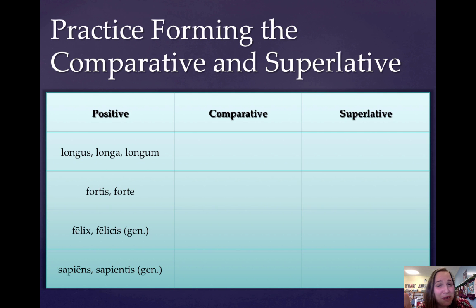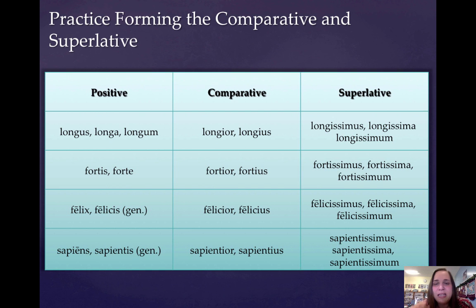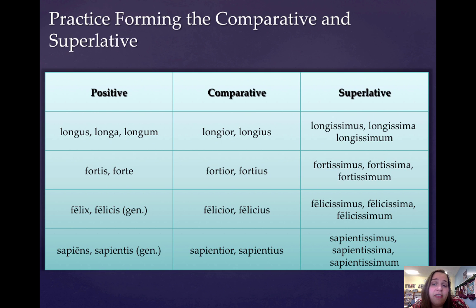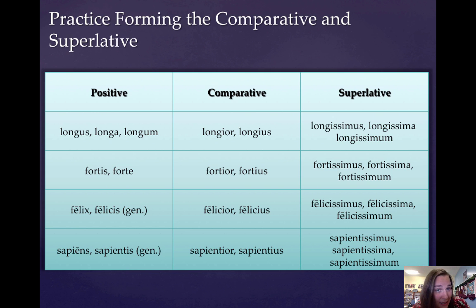Let's take a look at whether you got it right. Longus, longa, longum becomes longior, longius — longer, or rather long — and longissimus, longissima, longissimum. Fortis, forte with adjective base fort becomes fortior, fortius; superlative fortissimus, fortissima, fortissimum. Felix, felicis becomes felicior, felicius; superlative felicissimus, felicissima, felicissimum. And sapiens, sapientis becomes sapientior, sapientius in the comparative, and sapientissimus, sapientissima, sapientissimum in the superlative.